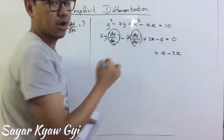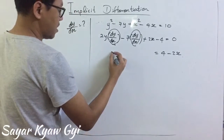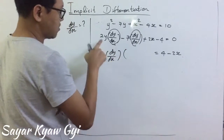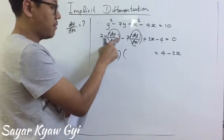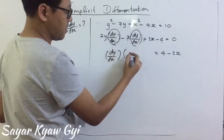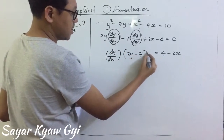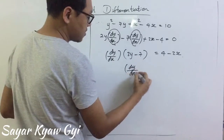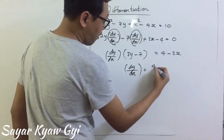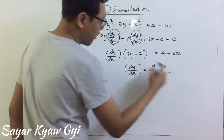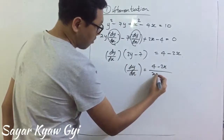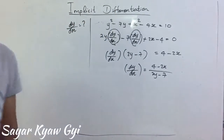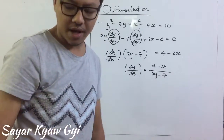This is the common factor, so I am going to factor out dy by dx. What is left here is 2y minus 7. And then you are going to find dy by dx equal to 4 minus 2x over 2y minus 7.